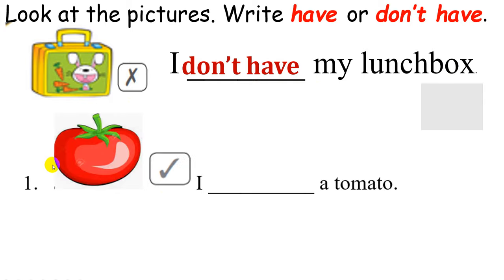Number 1. This is a tomato. And can you see the tick? What can you write here? Have or don't have? Have. You have 5 seconds. What's your answer? Now, let's check. Have. I have a tomato. Good job.